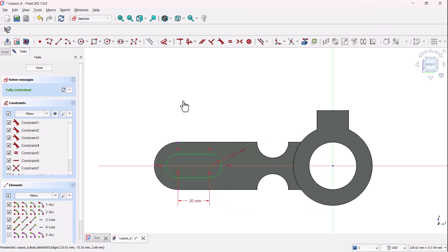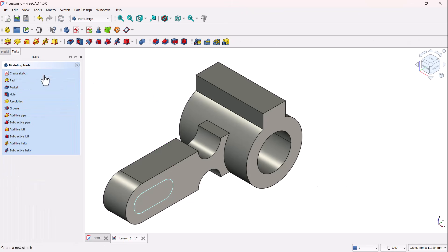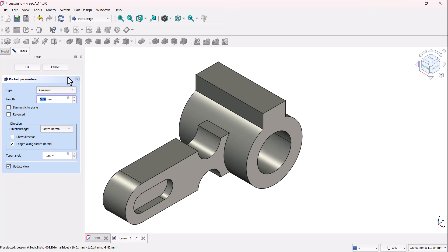Okay, the sketch turns green and we're fully constrained. Close the sketch, head back to the part design workbench, and select the pocket tool. Change the type drop down in pocket parameters to through all. This cuts the slot completely through the part and click OK.